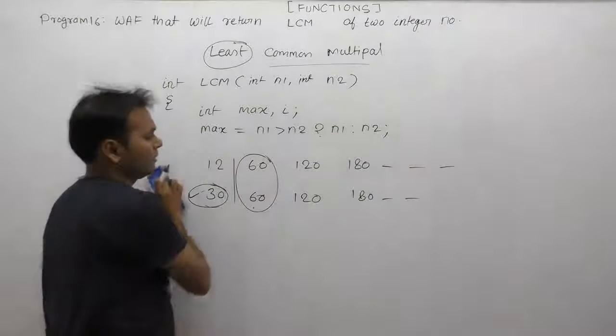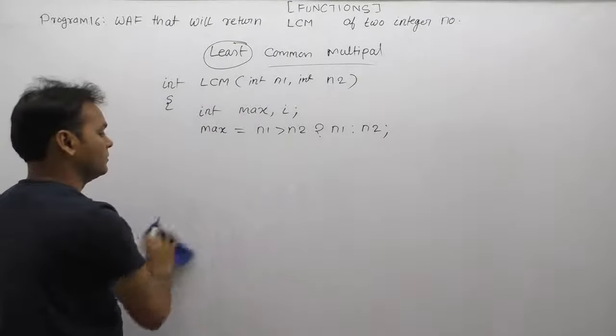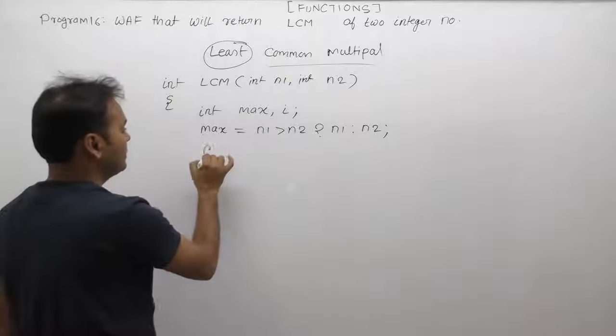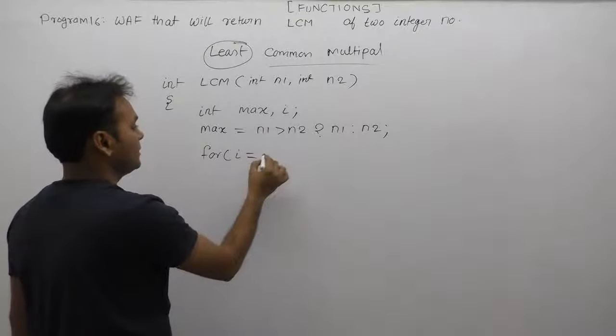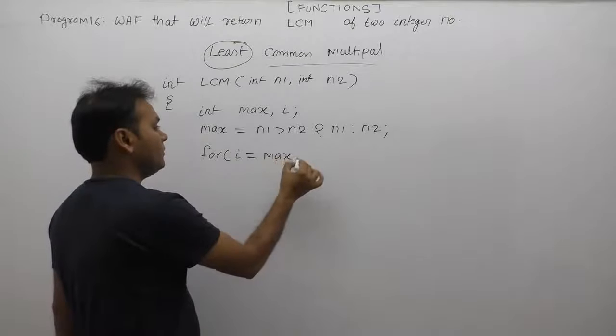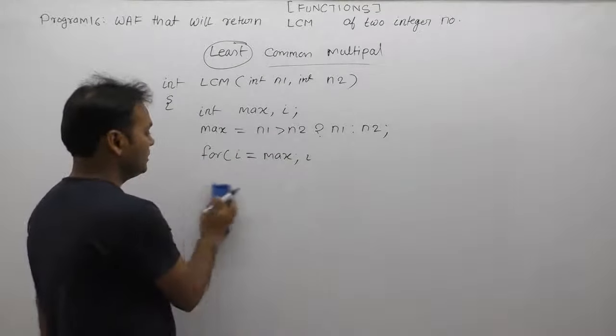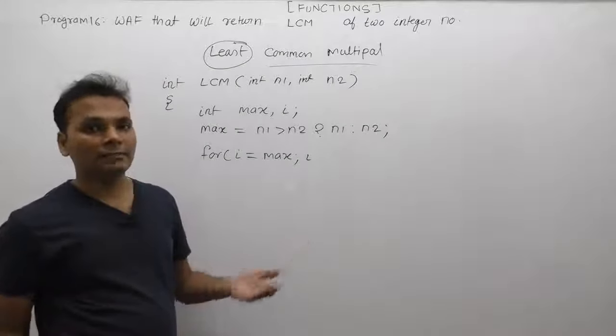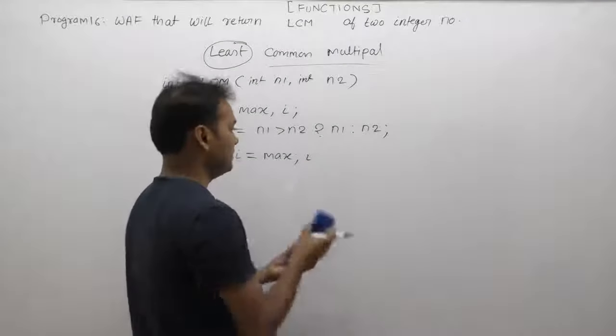Next, we write a for loop. Initialize i to max. The loop should run until we find the LCM, so there's no fixed limit. The condition can be empty or set to 1, which is always true.